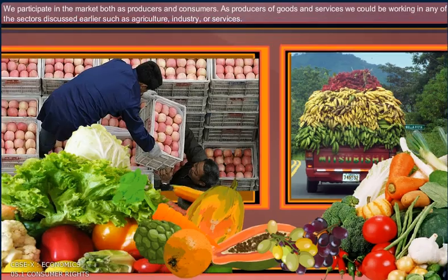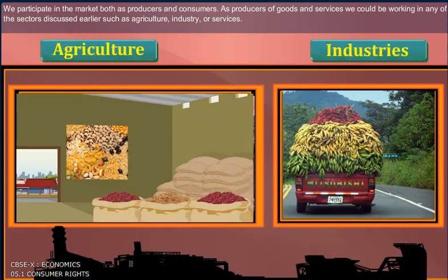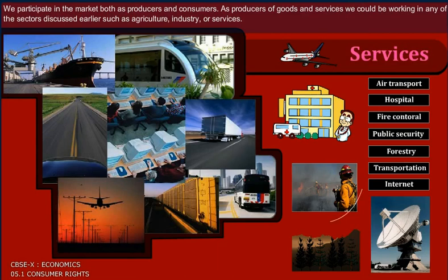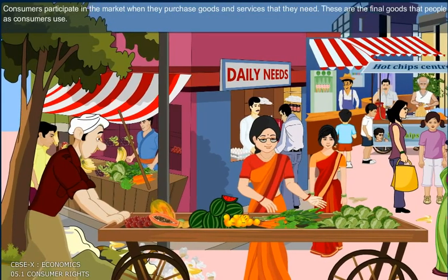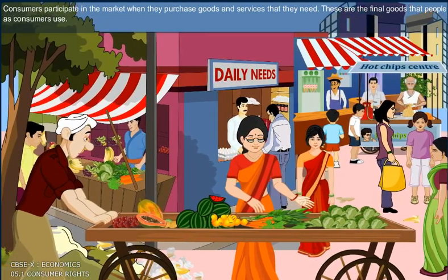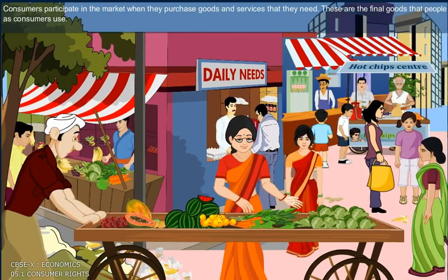We participate in the market both as producers and consumers. As producers of goods and services, we could be working in any of the sectors discussed earlier, such as agriculture, industry or services. Consumers participate in the market when they purchase goods and services that they need. These are the final goods that people as consumers use.